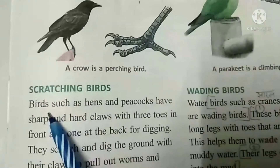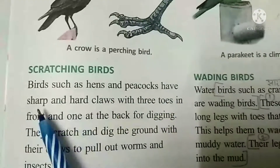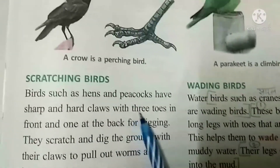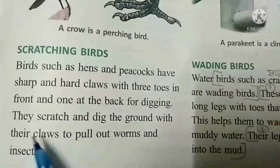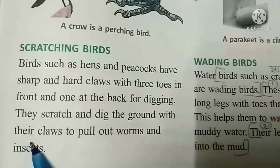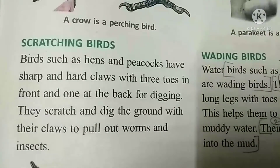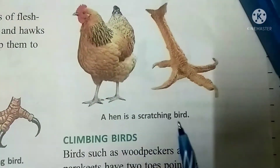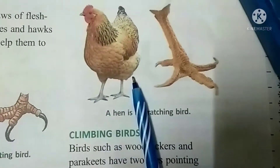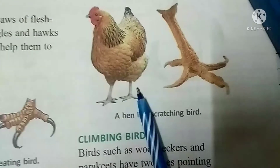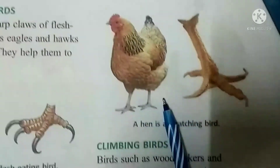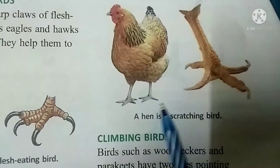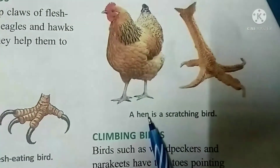Scratching birds. Birds such as hens and peacocks have sharp and hard claws with three toes in front and one at the back for digging. They search and dig the ground with their claws to pull out worms and insects. A hen is a scratching bird. Ye apne toes ka upayog jamin ko scratching karne, khodne, aur usme search karne ke liye karte hain.